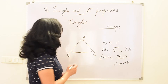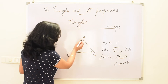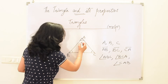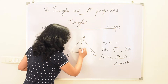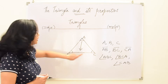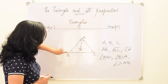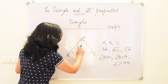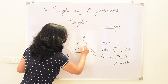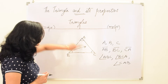Now let us see the side opposite to vertex A. Vertex A is here, and the side which is opposite to vertex A is side BC. Similarly, the side which is opposite to vertex B is AC. And the side opposite to vertex C is AB.